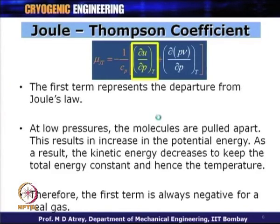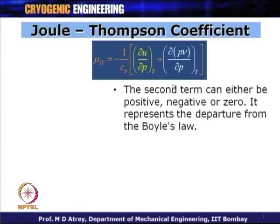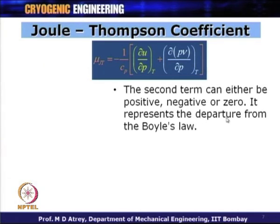Now the second term — del(PV) by del P at constant temperature — is the most important term, and it will decide if the bracket is positive, negative, or zero. This represents departure from Boyle's law. Boyle's law says PV remains constant for a given temperature, but here we are talking about changes in PV with pressure at constant temperature.